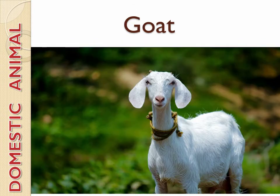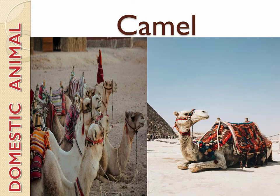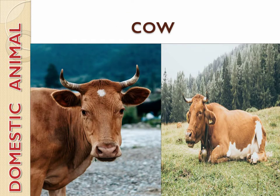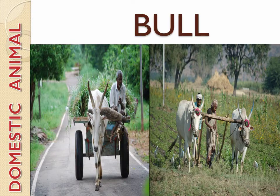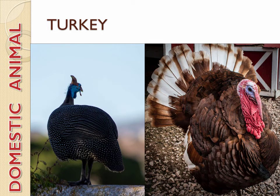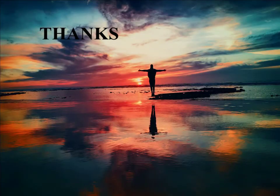Goat is a domestic animal. Camel is a domestic animal. Cow is a domestic animal. Bull is a domestic animal. Turkey is a domestic animal. Thank you.